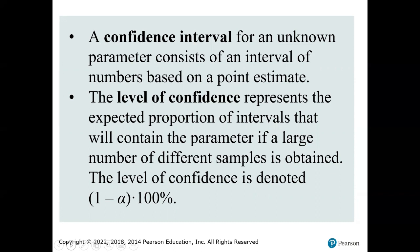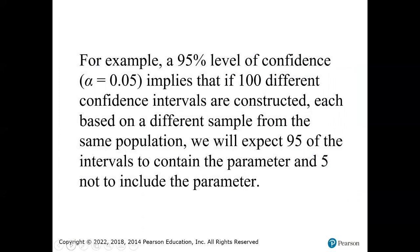If I have 95% confidence, that means if I were to pull a sample 100 times, I would expect 95 of the 100 to have a point estimate within my range. A 95% level of confidence also implies an alpha of 0.05. So 95% level of confidence implies that if 100 different confidence intervals were constructed, we would expect 95 of the intervals to contain the parameter and 5 not.